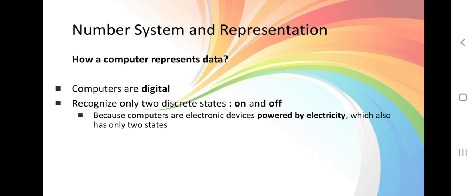Computers are digital, recognize only two discrete states on and off. Because computers are electronic devices powered by electricity which also has two states.